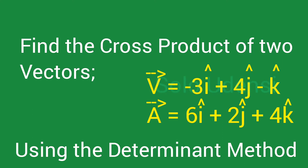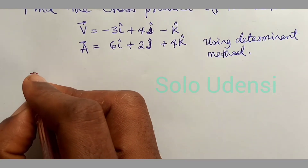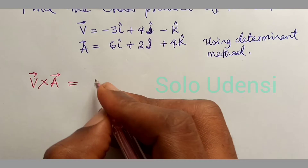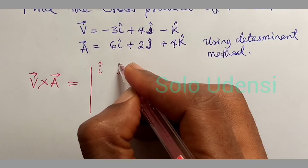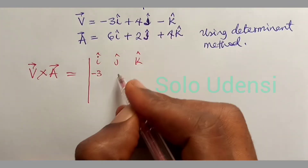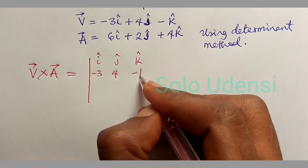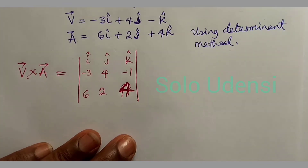Find the cross product of two vectors: V is equal to 3î + 4ĵ − k̂ and A is equal to 6î + 2ĵ + 4k̂ using the determinant method. In the determinant method, we write V cross A as a 3×3 determinant with rows I, J, K; then 3, 4, −1; then 6, 2, 4.